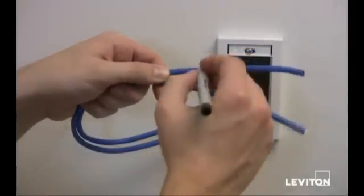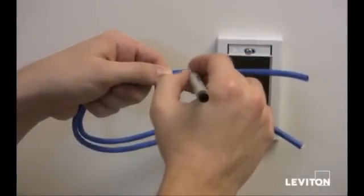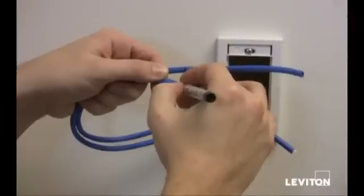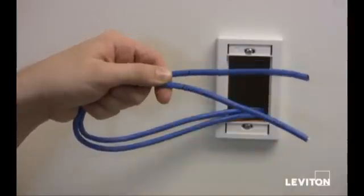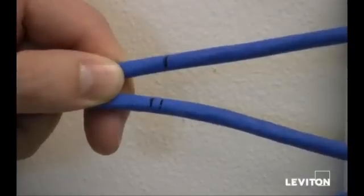Start by placing identification marks on both ends of the cables so they are not interchanged during termination. Remember to mark them far enough back so as to not lose the mark when stripping the cable.